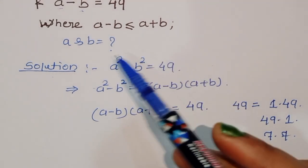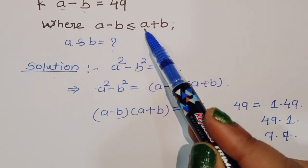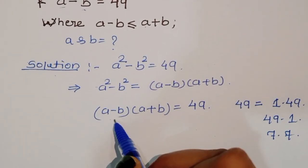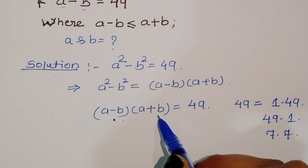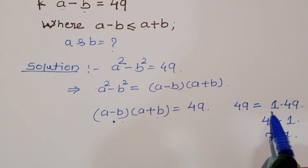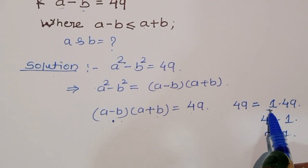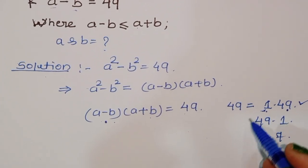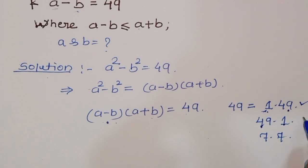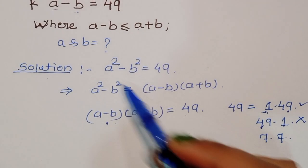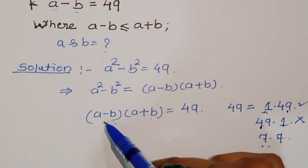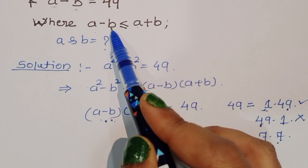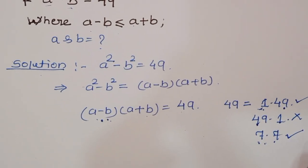Now, what is the condition given in the question? A minus b is less than or equal to a plus b — meaning this term is less than or equal to this term. For the factor pair 1 and 49, the first term 1 is less than 49, so it is satisfied. For 49 times 1, the first term is greater than the second, so this is cancelled. For 7 times 7, a minus b equals a plus b, which is also allowed by the condition, so this is also satisfied.